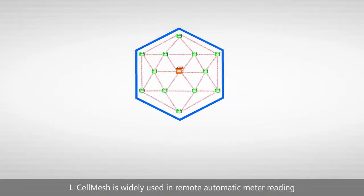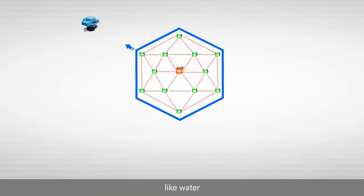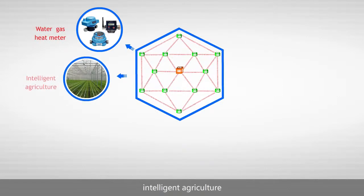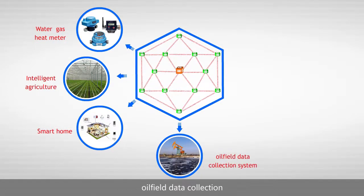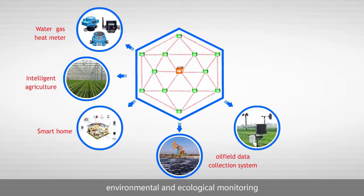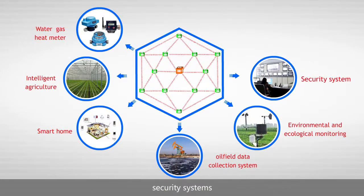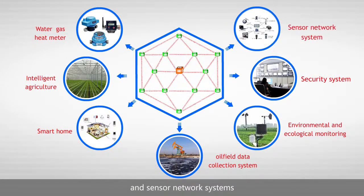L-Cell Mesh is widely used in remote automatic meter reading, such as water, gas, heat meters, intelligent agriculture, smart home, oil fuel data collection, environmental and ecological monitoring, security systems and sensor network systems.